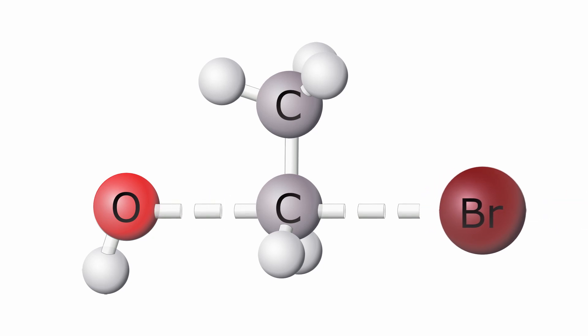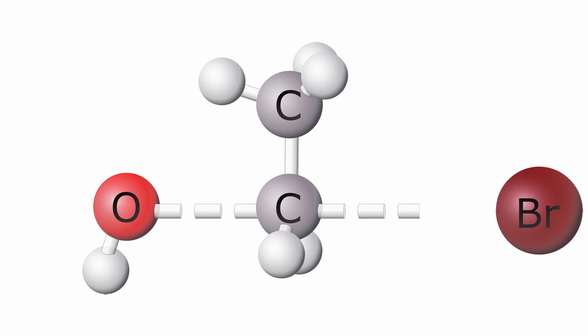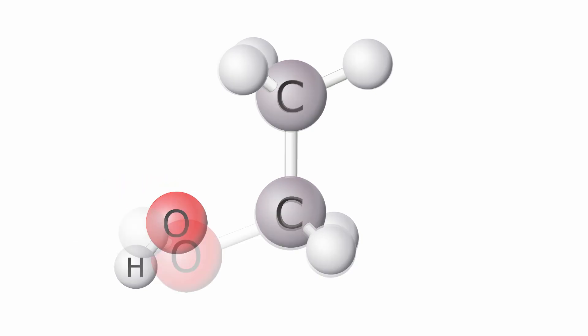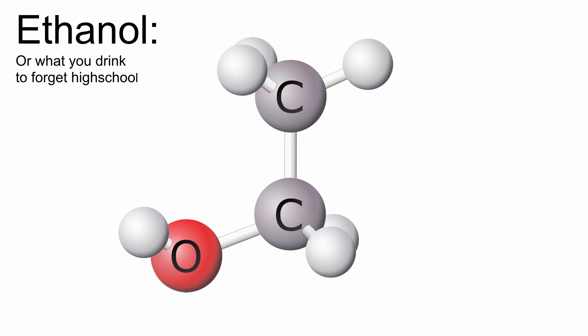As bromine leaves and breaks its bond with carbon, the bonds carbon has with the hydrogens swing back to take advantage of the new space, and hydroxide cements its bond with the carbon. This yields the new molecule ethanol, which is coincidentally what humans use to break bonds of their own.